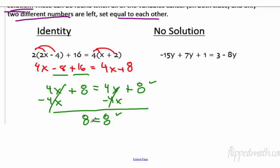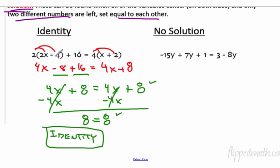When does 8 equal 8? Always. So we write identity. This means it doesn't matter what number you plug in — it'll work. Let's pick 2: 2 times 2 is 4, 4 minus 4 is 0, 0 times 2 is 0 plus 16 gives 16. On the right: 4 times (2 plus 2) is 4 times 4 is 16. It works. Plug in 0 or negative 10 — it'll still work. That's why it's called an identity. The variable terms cancel out and you're left with two numbers equal to each other.